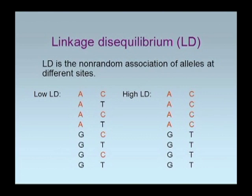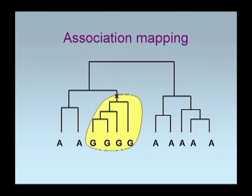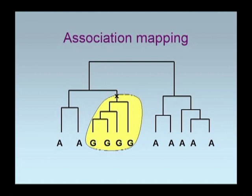Let me describe briefly why linkage disequilibrium, or LD as it's often called, is relevant. If you look at a sample of individuals, these individuals are related to each other. I've drawn a little cartoon representing the genealogy or relationships among individuals. We often think of certain mutations that may affect some complex trait, and those mutations show up at a specific time in a group of individuals that are related to each other — near each other on this tree.